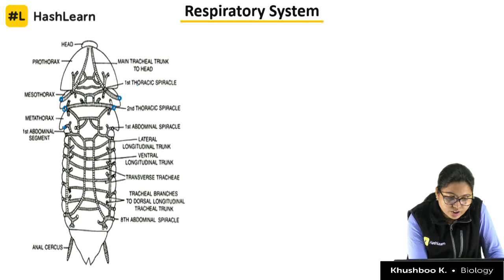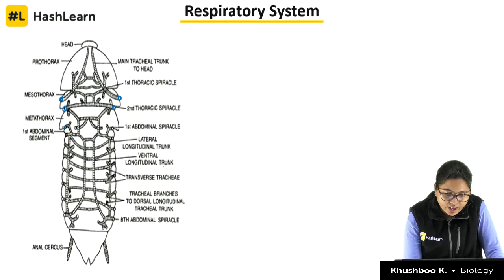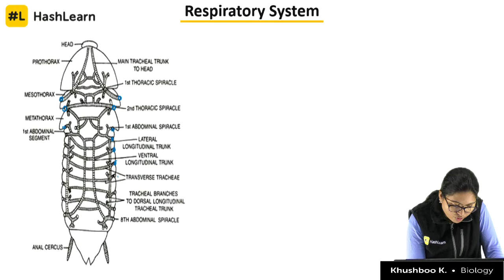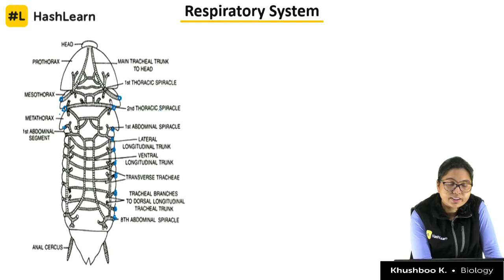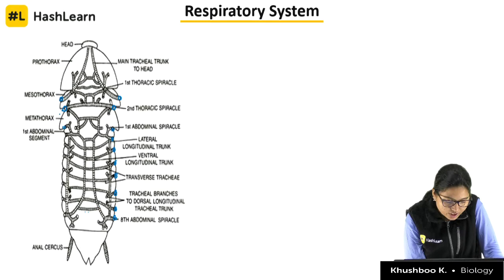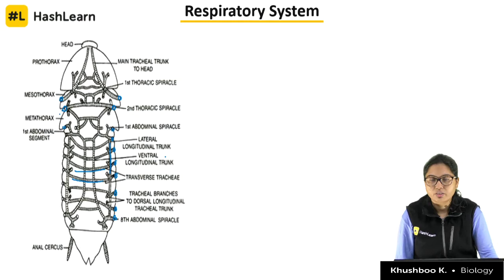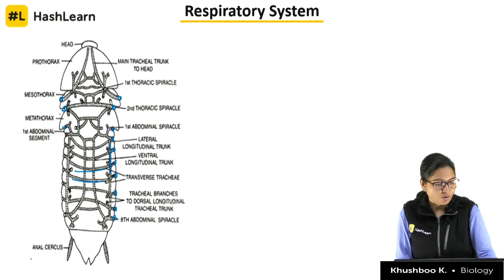In the thorax there are 2 spiracles — the first and second thoracic spiracles — and the remaining 8 are in the abdomen, giving a total of 10 pairs. The tracheal tubes are connected transversely and longitudinally, forming lateral trunks, interconnecting the entire tracheal system so that oxygen reaches every part of the body.